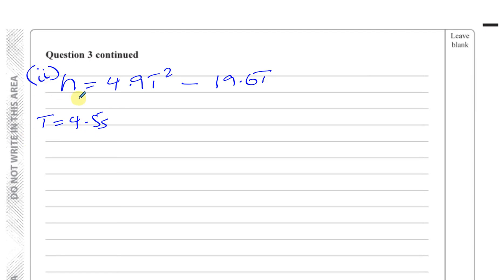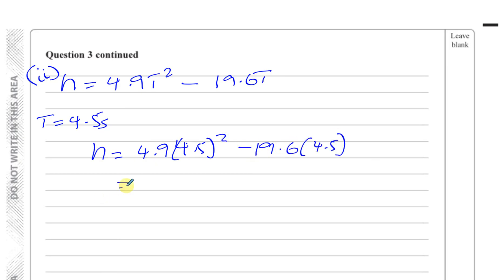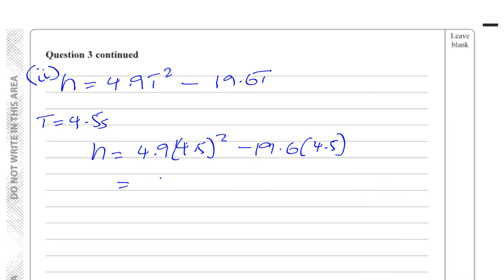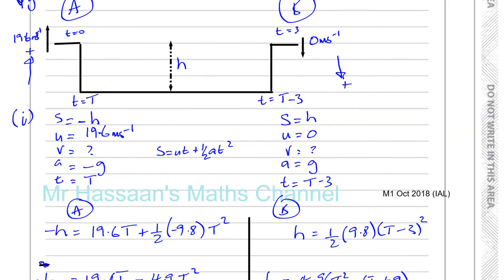So H equals 4.9 times 4.5 squared minus 19.6 times 4.5, which gives 11.025 metres — so H equals 11 metres to 2 significant figures, because we used G as 9.8. This question requires you to be really careful about your directions and signs, as that will mess you up here.